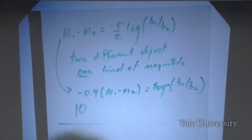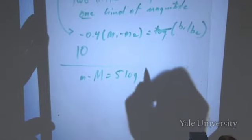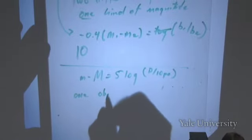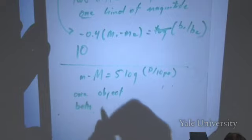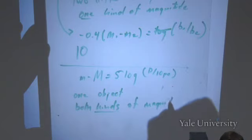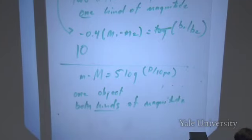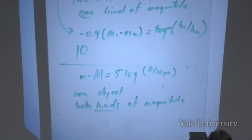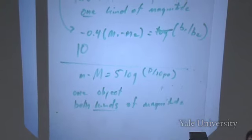The other equation is: m minus M equals 5 log(d / 10 parsecs). This relates one object's apparent and absolute magnitudes to each other, and to the distance to the object. The first equation involves two different objects but only one kind of magnitude. This second one involves one object and relates both kinds of magnitudes to the distance. Both equations have three unknowns, so you need to know two things to find the third.